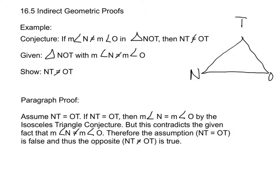We're going to start with the conjecture that if the measure of angle N does not equal the measure of angle O in triangle NT, and we're given that measure of angle N does not equal measure of angle O, we're going to show that segment NT does not equal segment OT. We're going to do a paragraph proof, which is easier for shorter proofs.